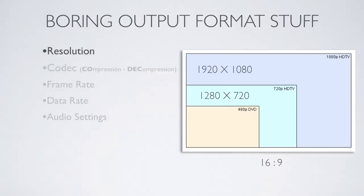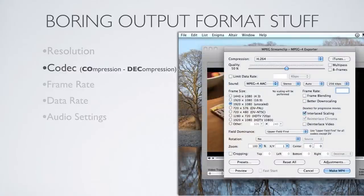This is a piece of software called MPEG Streamclip — a typical tool you might use to convert your file. It looks daunting with many settings you may not need, but let me go over a couple of things. For codec, you select the type of compression — you'll notice it's set to H.264, which is great. There's also a button that says iTunes; if it's a piece of audio you just hit that button and it'll easily make it ready for you.